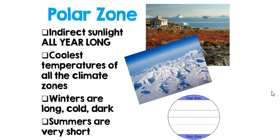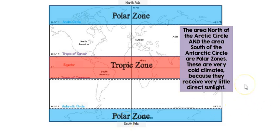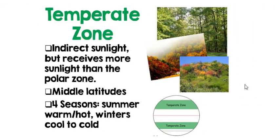The polar zone is freezing — it gets the most indirect sunlight all year long and has the coolest temperatures of all the climate zones. The polar zone sits beyond the Arctic Circle to the north and the Antarctic Circle to the south, receiving very little direct sunlight.